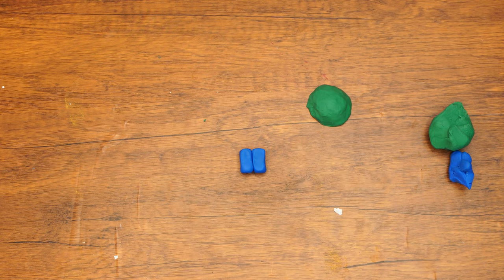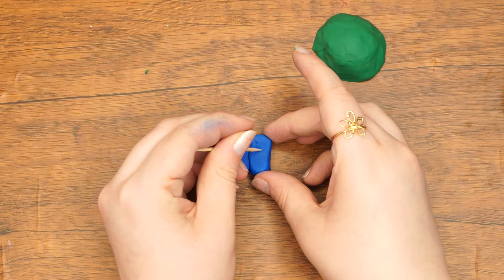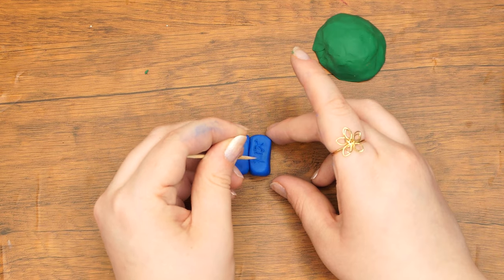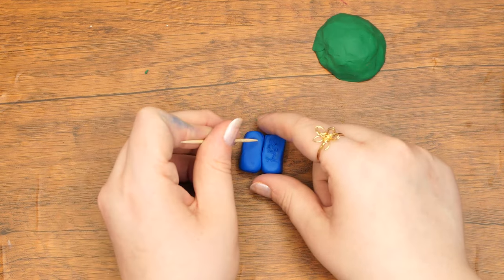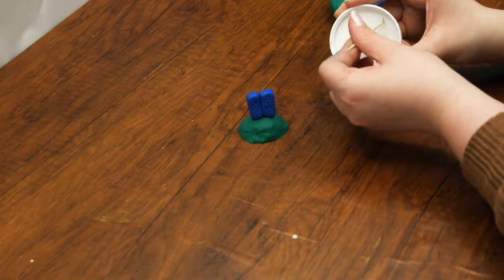Next, use a toothpick to etch Aleph-Bet letters into the luchos. The actual luchos contain all of the words in the Aseret HaDibrot. There isn't enough space on these tiny luchos to include all of that, but for this craft it's okay to suffice with the first few letters of the Aleph-Bet.